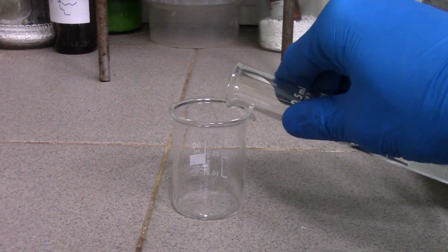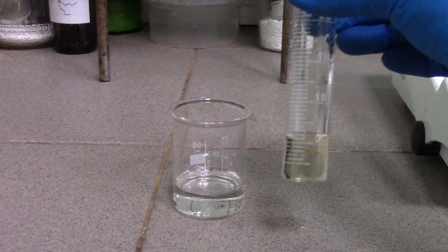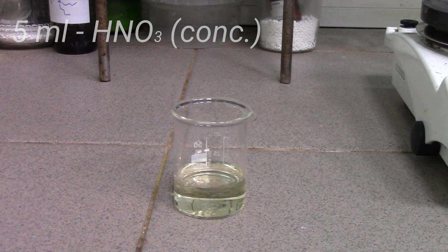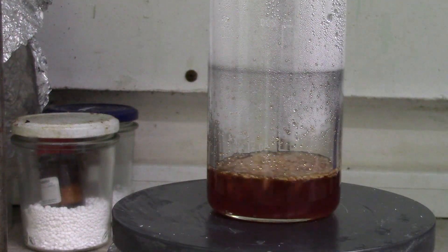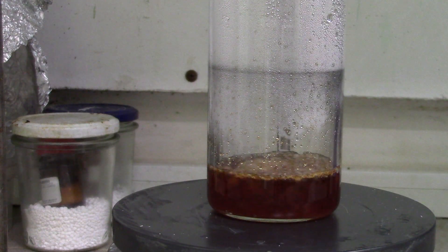While water was evaporating, I prepared an oxidizing mixture containing 15 milliliters of concentrated hydrochloric acid and 5 milliliters of concentrated nitric acid. Now let's add it to the tetrachloropalladate solution.